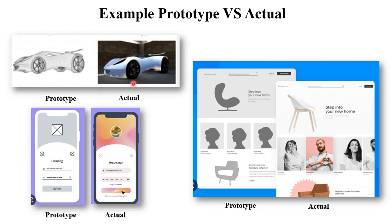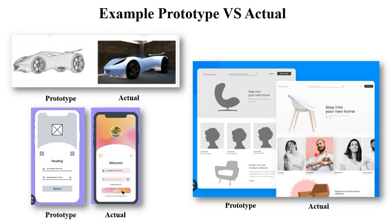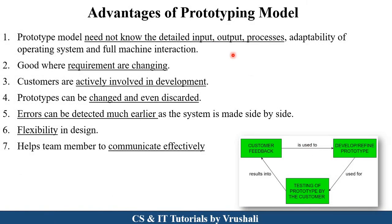Here are some examples showing actual models versus prototypes. In the first image, there is a particular vehicle — a rough prototype design and the actual model. For an application, the prototype shows just a placeholder image, a heading, a username field, a password field, a button, and a checkbox. In the actual implementation, real images, actual headings, and a proper login button are shown. Similarly for a website, the prototype shows placeholder images with basic information layout, while the actual website has real images and actual content.